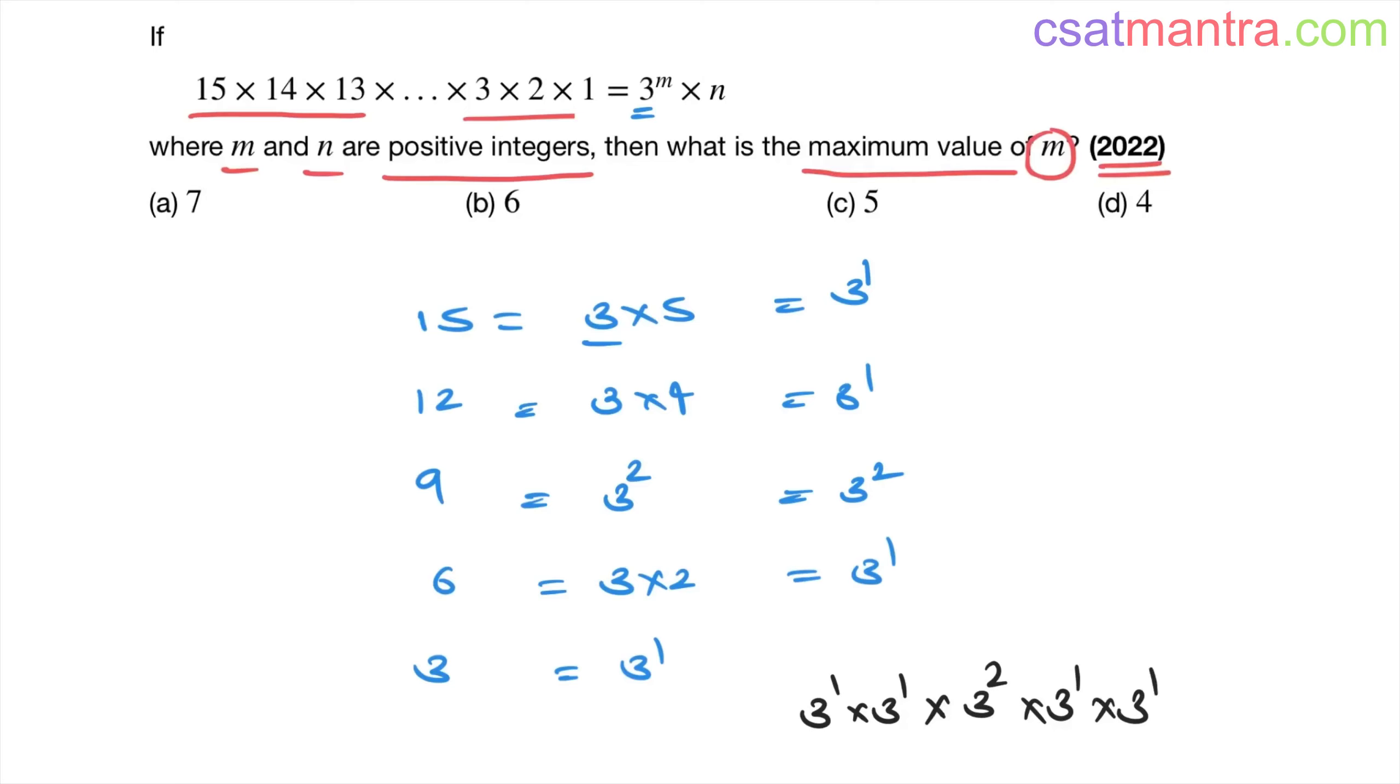Okay, so bases are the same, so you can add powers. 1 + 1 + 2 + 1 + 1 = 6. So 3^6. On the left-hand side we have 3^6, right-hand side 3^m. When bases are the same, power should be the same. M should be 6, this is the maximum value we can have. So the answer is (b).